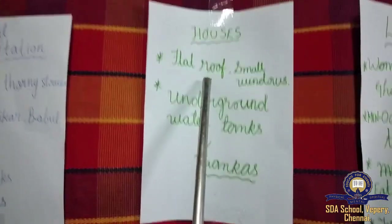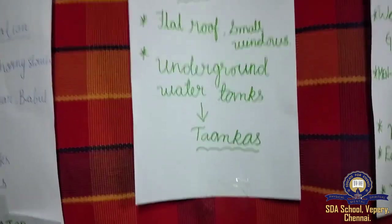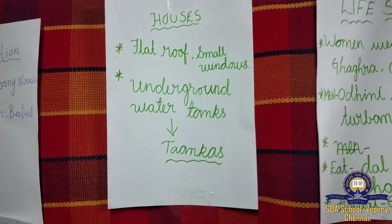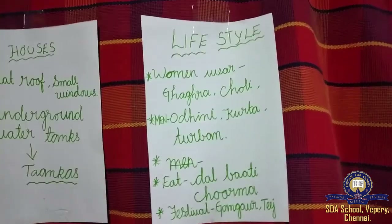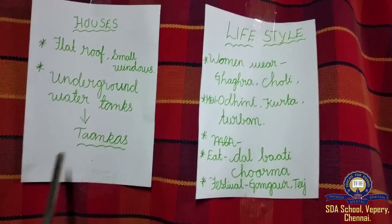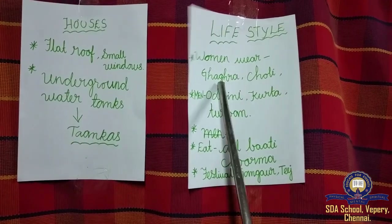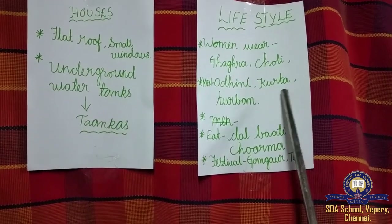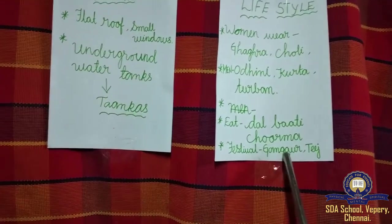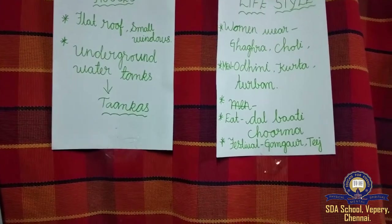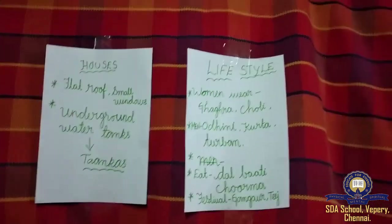Houses have flat roofs with small windows. Some people have underground water tanks called tankers. Those who don't have tanks go for long walks to fetch water from rivers or other sources. Women wear gagra choli and dhoni; men wear kurta and dhurban. They eat dal bati kurma and celebrate festivals called Gangaur and Teej. Their folk dances are Ghoomar and Kalbelia.